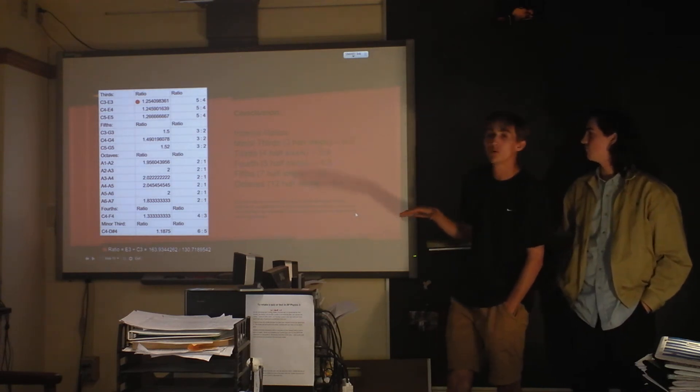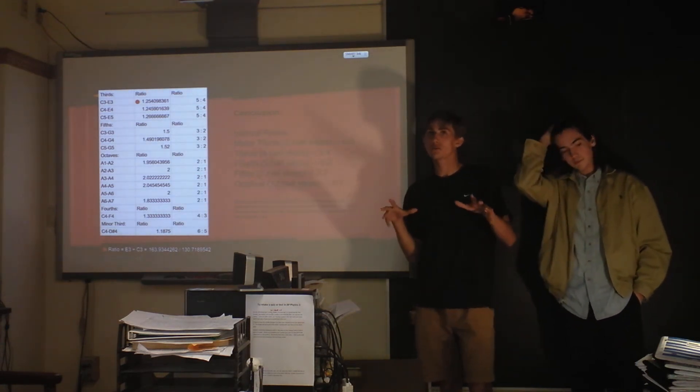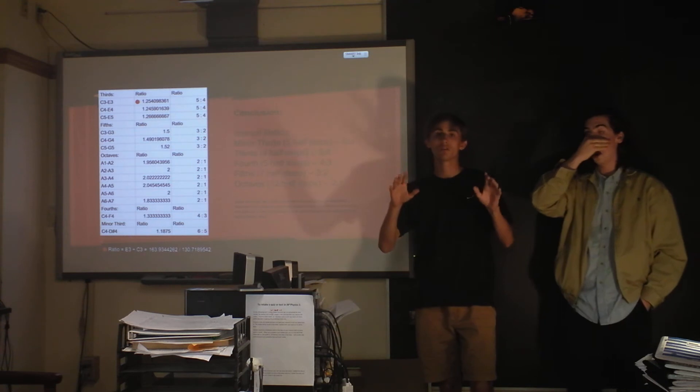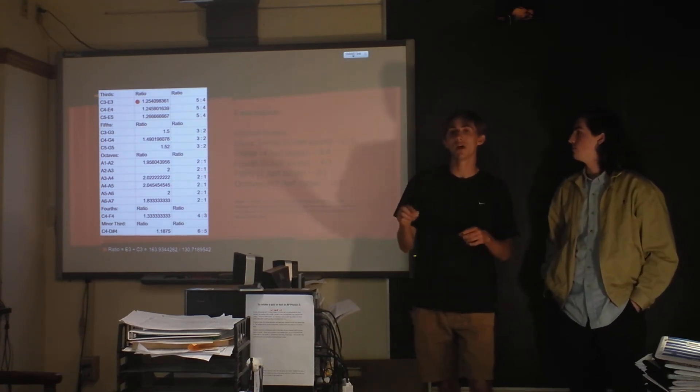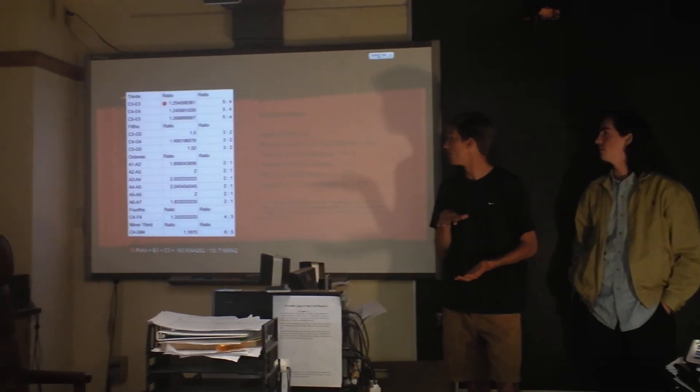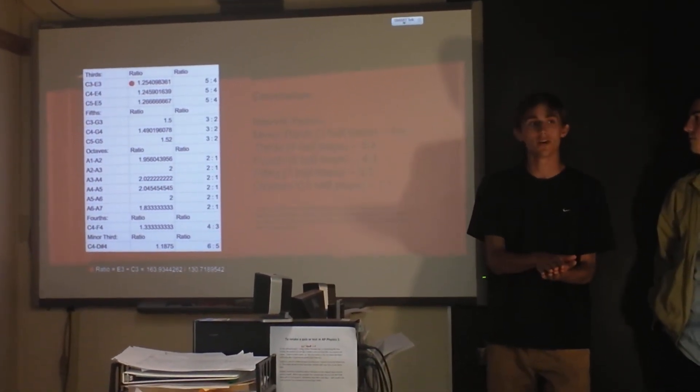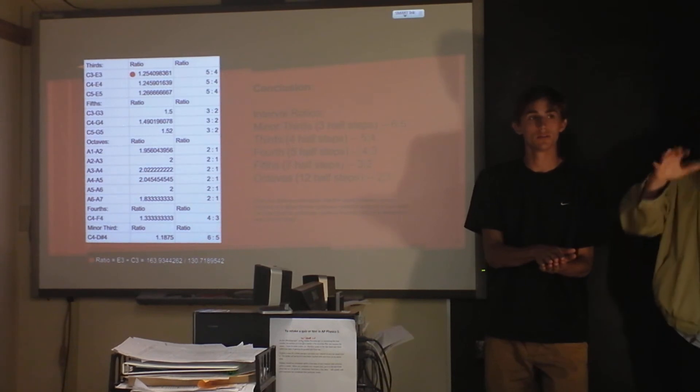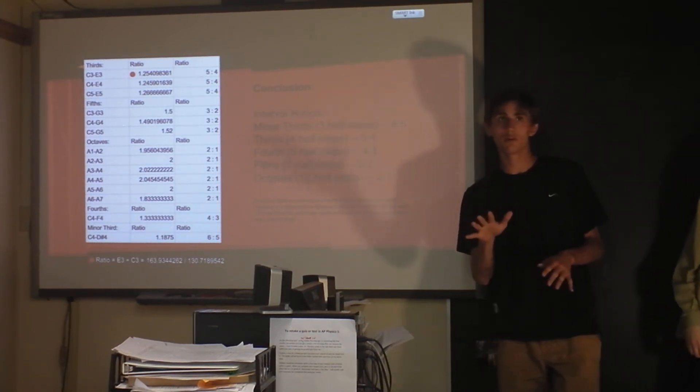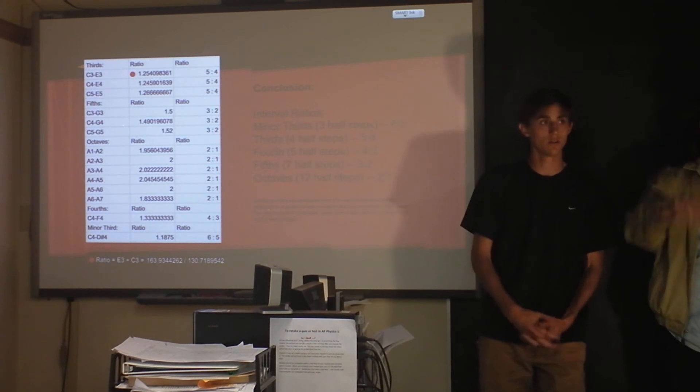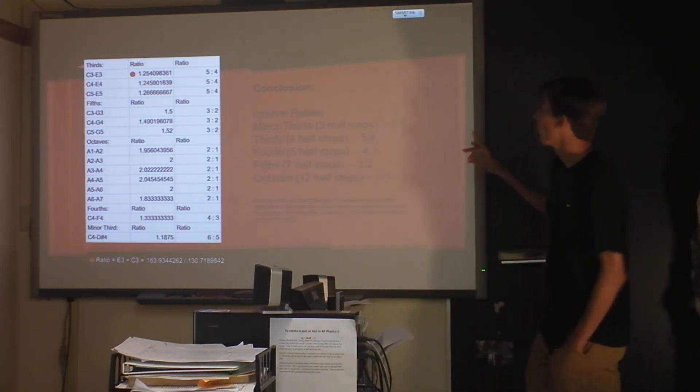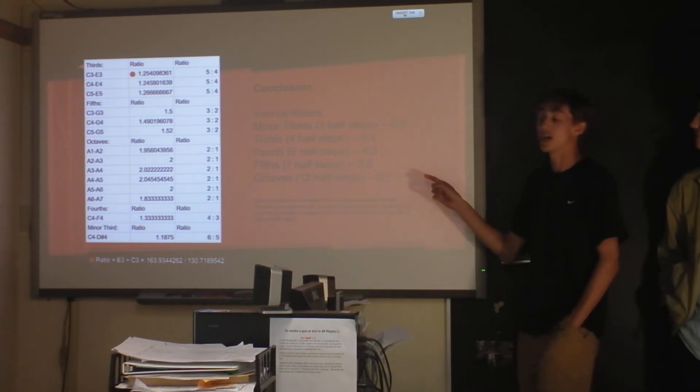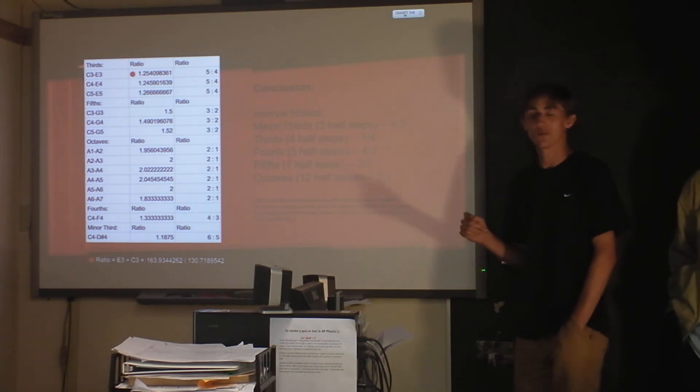And then after that, what we did is within one octave, we took the fifth and divided it by the frequency of the one. Does that make sense? The fifth note of the scale divided by the first note, G divided by C. And we found that no matter what the octave, the ratio was the same. So this disproved our hypothesis. A little fun fact, we were wrong.